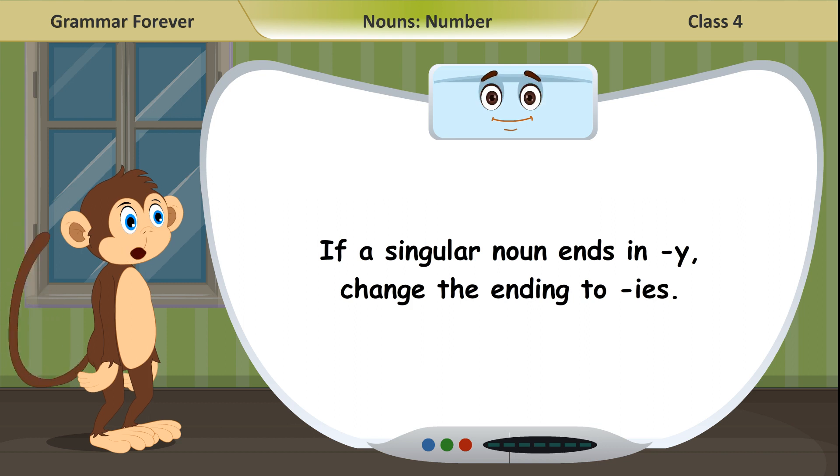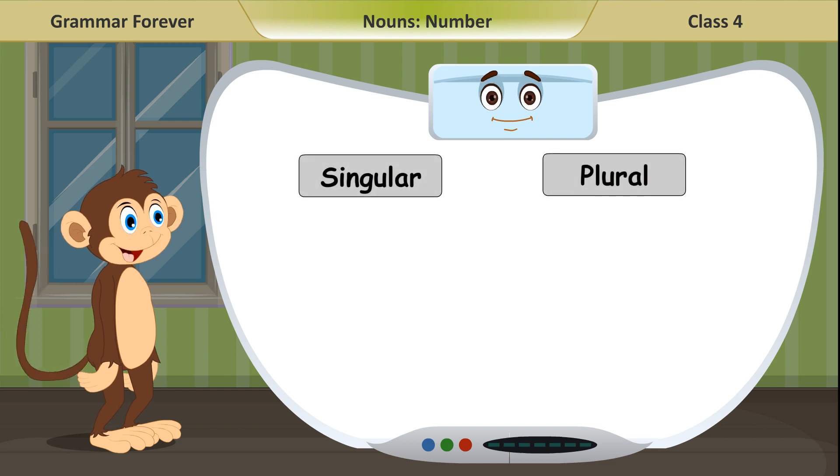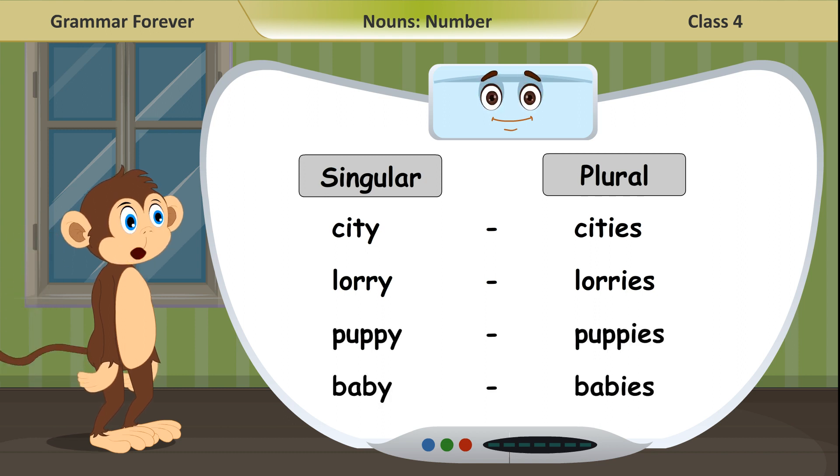If a singular noun ends in Y, change the ending to IES. Singular, plural: City, cities. Lorry, lorries. Puppy, puppies. Baby, babies.